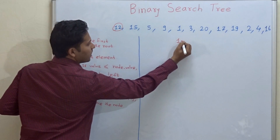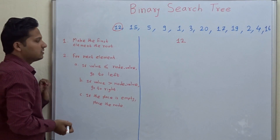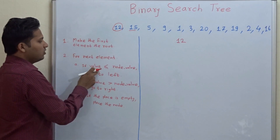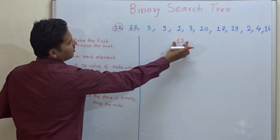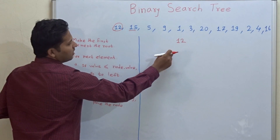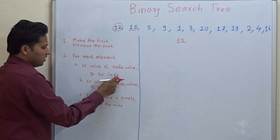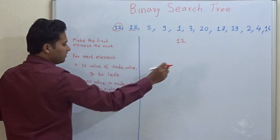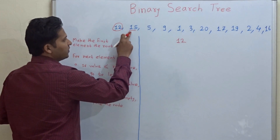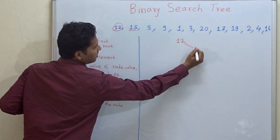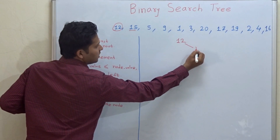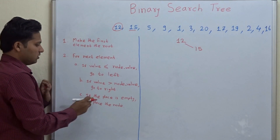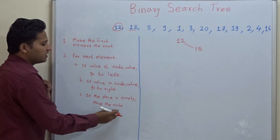For the next element: if the value is less than the current node value, go to the left. If the value is greater than the node value — for example, 15 is greater than 12 — then go to the right. Since 15 is greater than 12 we go right, and as the place is empty we attach 15 to the right of 12. That is the third step: if the place is empty, place the node.